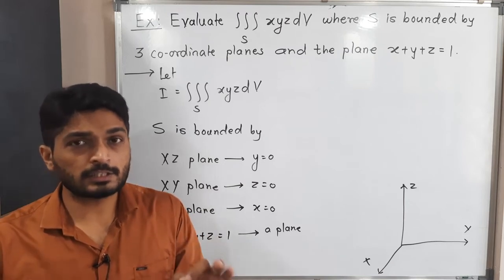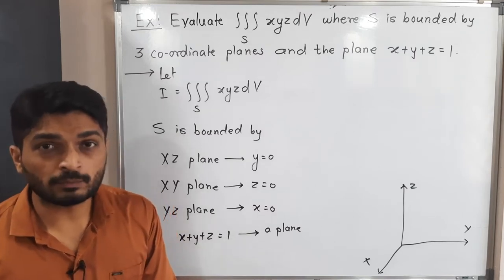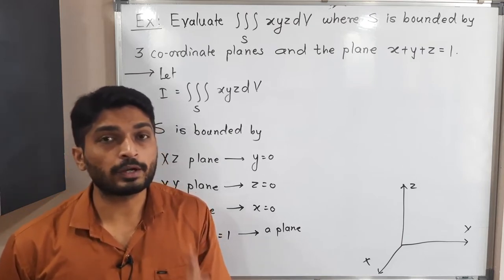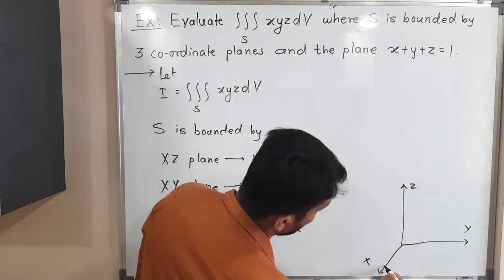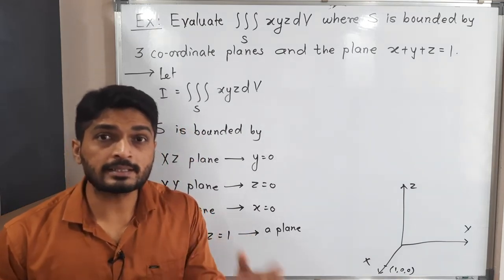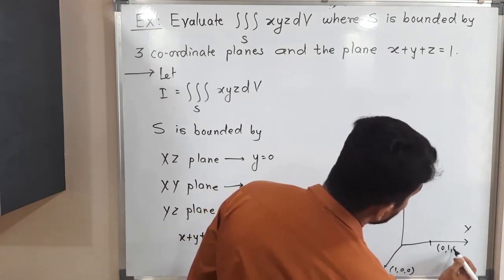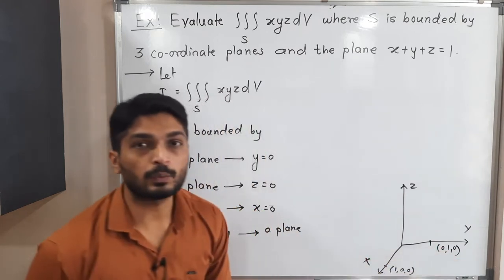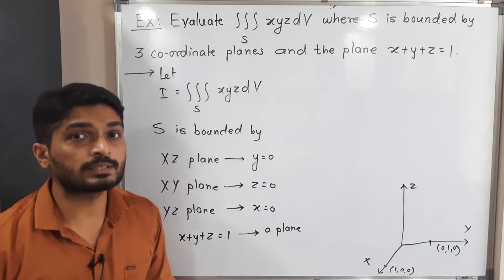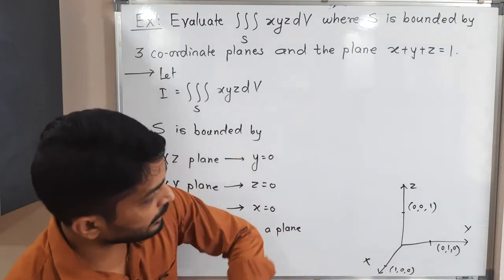To find the intercepts: putting y = 0 and z = 0 gives x = 1, so the plane cuts the x-axis at (1, 0, 0). Putting x = 0 and z = 0 gives y = 1, so the intercept is (0, 1, 0). Putting x = 0 and y = 0 gives z = 1, so the intercept is (0, 0, 1). This plane cuts all three axes at these three different points.